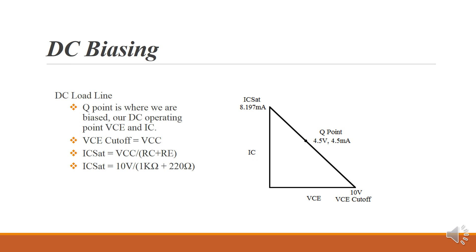Our Q point is where we're actually operating at. It's our VCE and IC. So we're at 4.5 volts and 4.5 milliamps. Now this basically shows the three operating regions of a transistor that we talked about in one of the earlier slides. So we've got saturation, cutoff, and the active region between those two points.